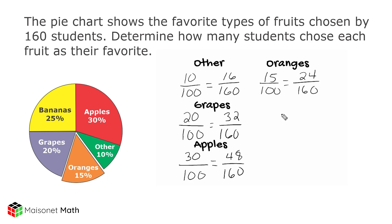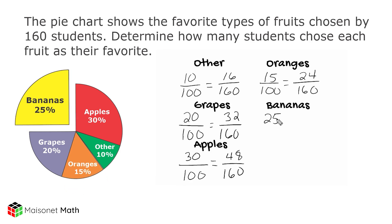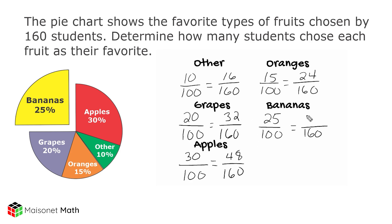And now for the last category, bananas. 25% of the students said they chose bananas as their favorite. Out of 160, that is going to be the number exactly in between 32 and 48, because 25 is directly in the middle of 20 and 30. The number in between 32 and 48 would be 40.